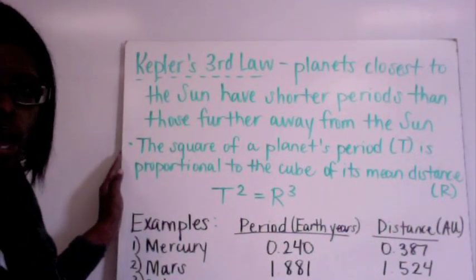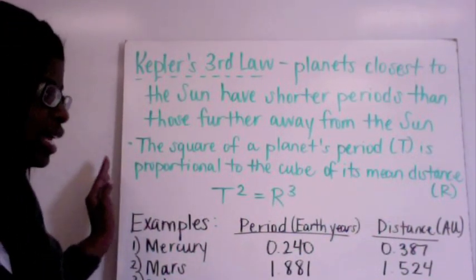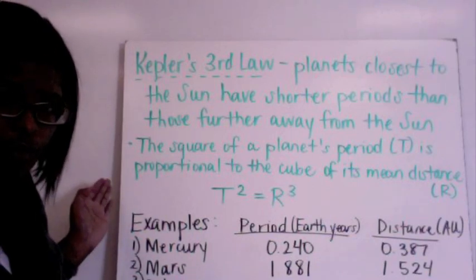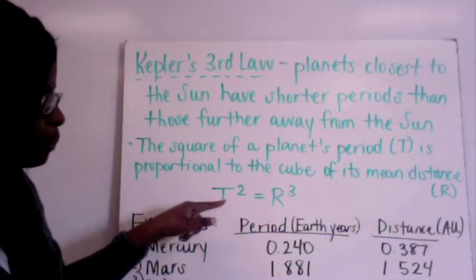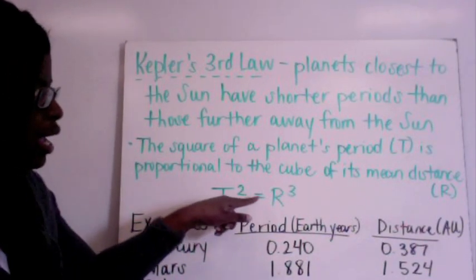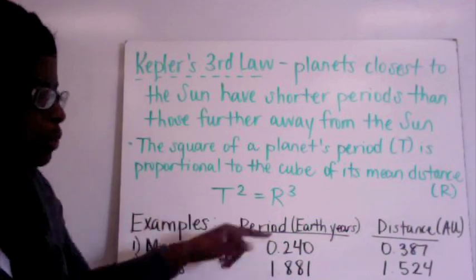So you can always do this calculation for yourself or any of the other planets that I have not included. For example, just remember that the period itself is going to be T squared and then the distance from the Sun is going to be R cubed.